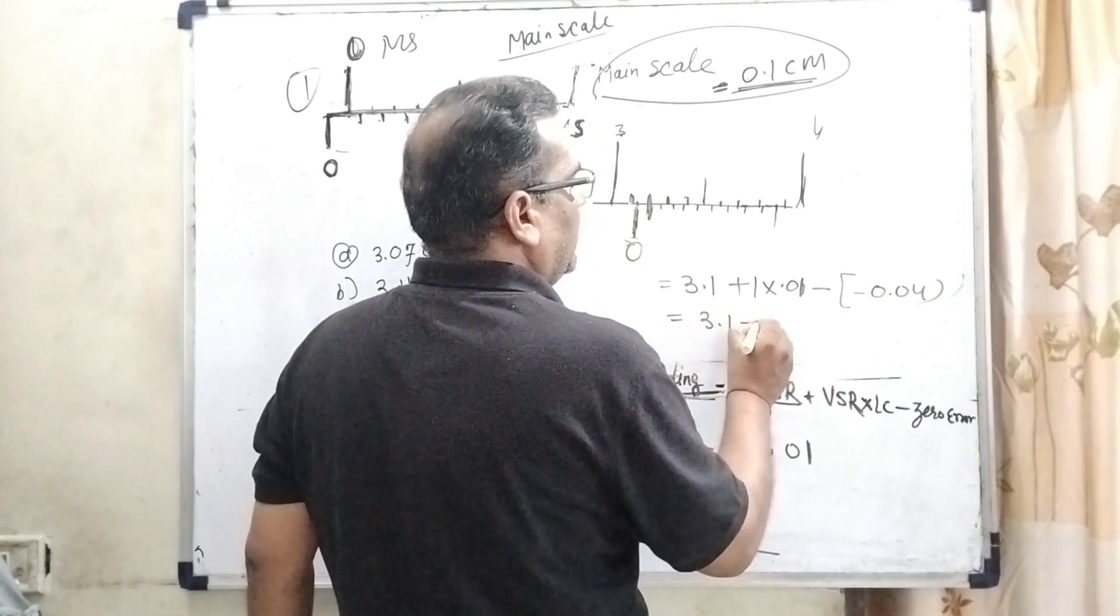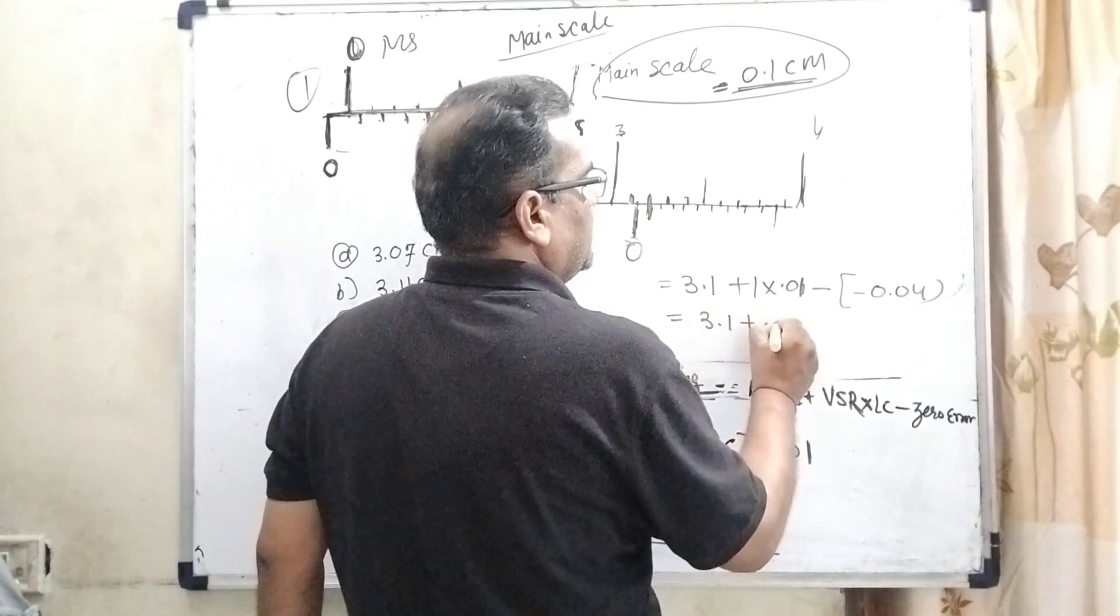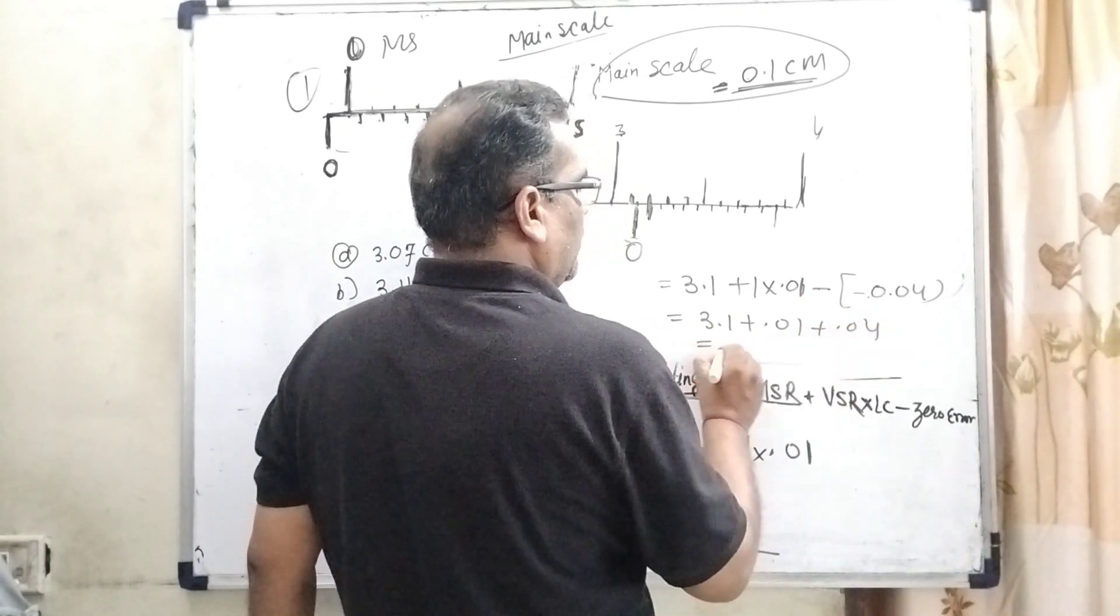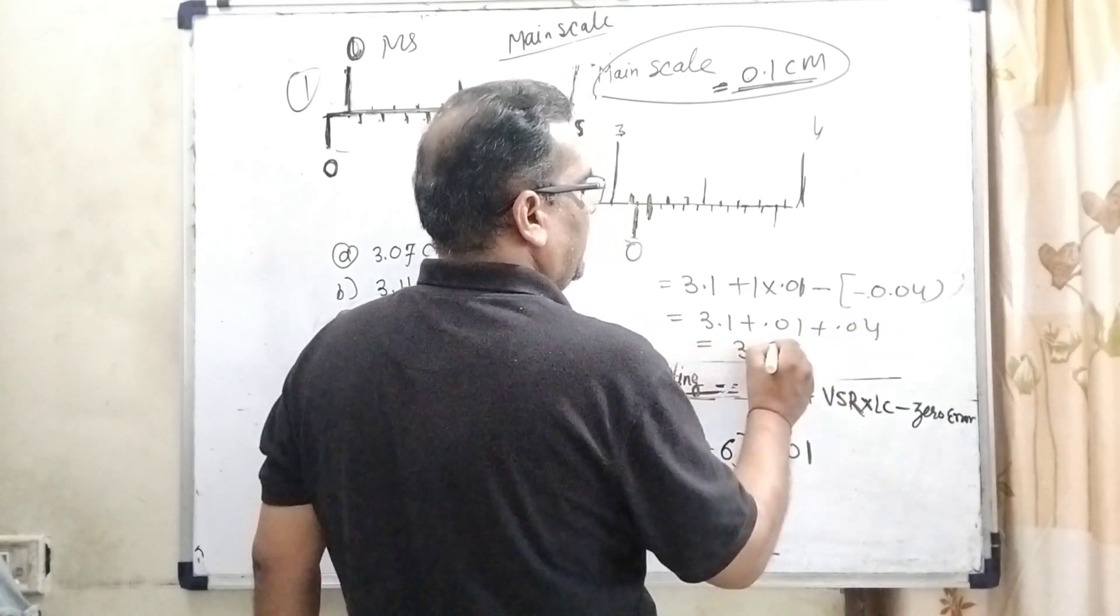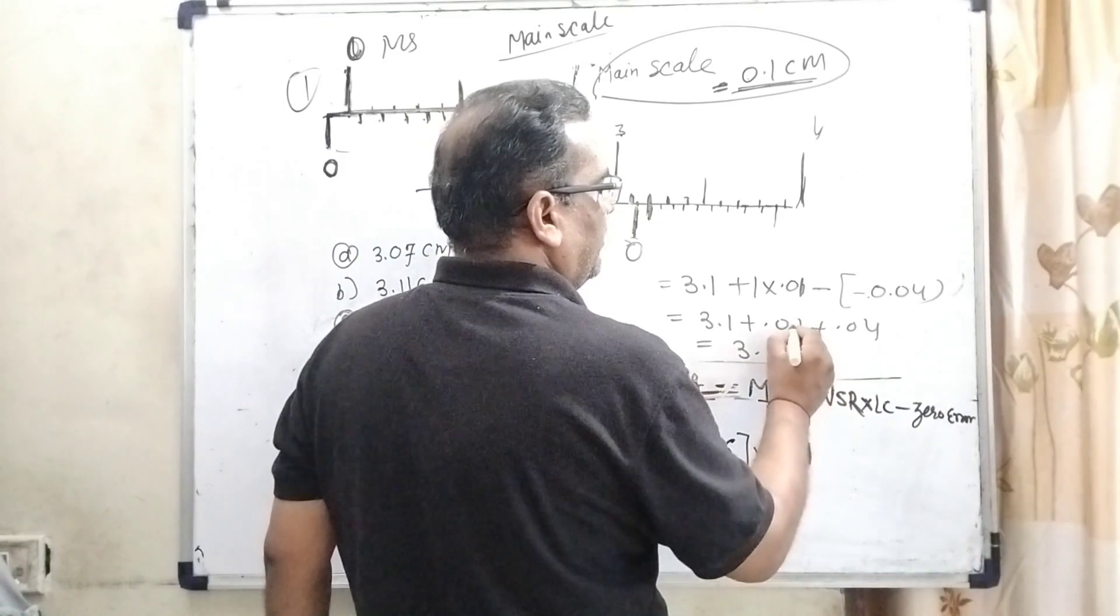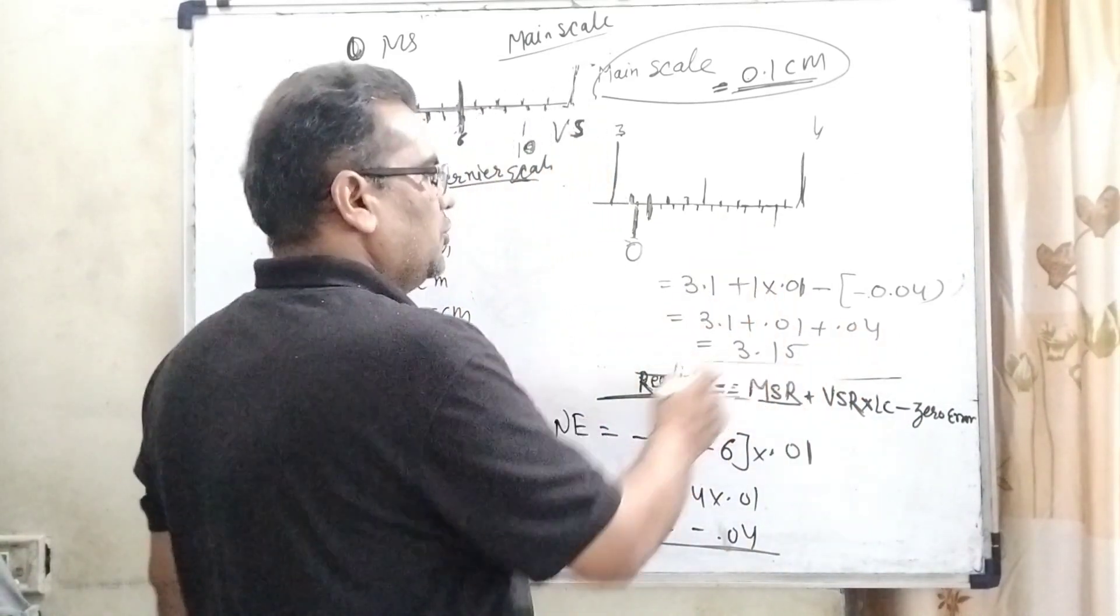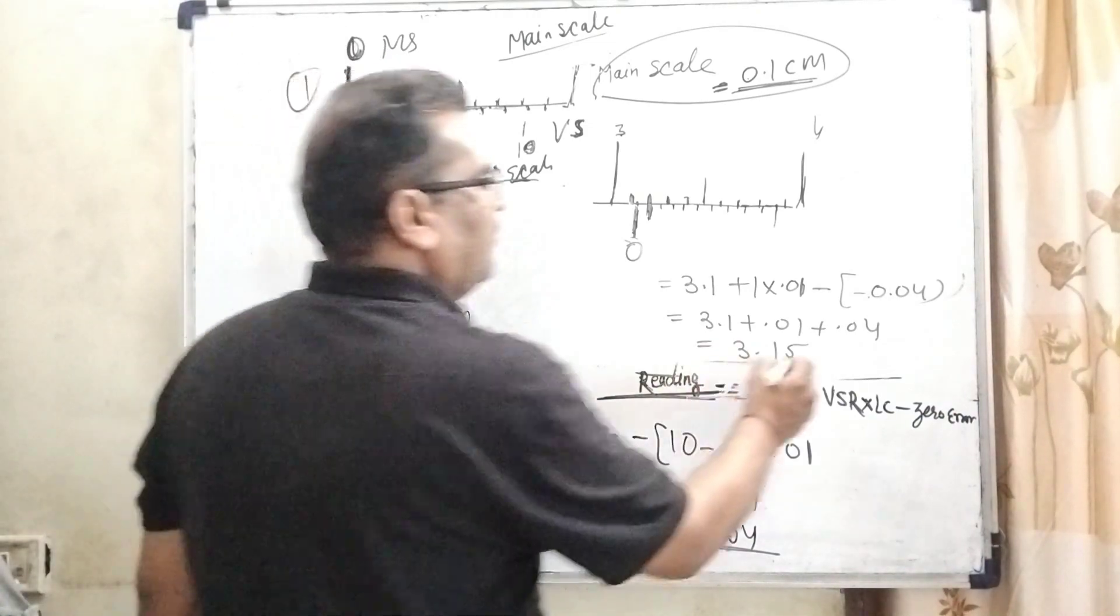So 3.1, 0.01, minus and minus gives plus, so plus 0.04. Then total reading is 3.1, 0.01 and 0.04 means 0.05. So total reading is 3.15 centimeter.